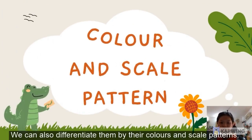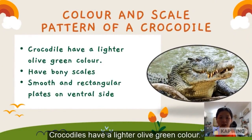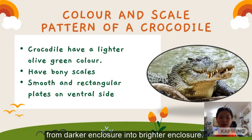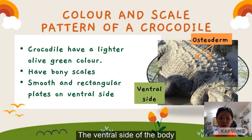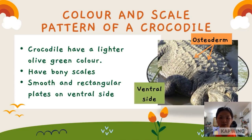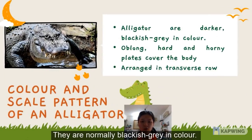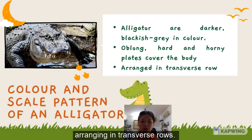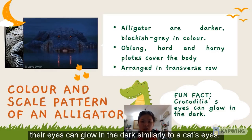We can also differentiate them by their colours and scale patterns. Crocodiles have a lighter olive green colour, and will lighten their colour when moving from a darker enclosure into a brighter one. They have a bony scale called osteoderm for protection, and the ventral side has smooth rectangular plates. Alligators are darker, normally blackish grey in colour. Their scales are oblong horny plates covering their entire body, arranged in transverse rows. A fun fact: their eyes can glow in the dark, similarly to a cat's eyes.